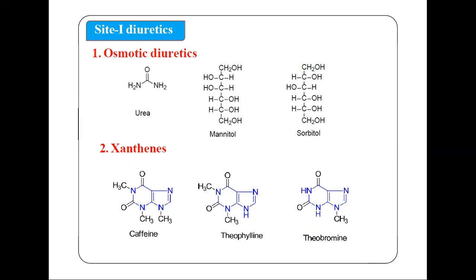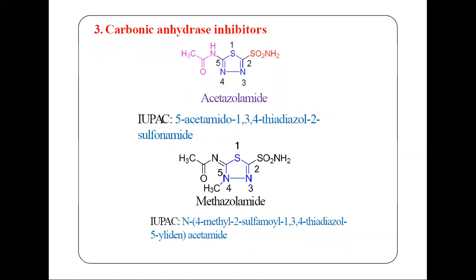The third class acting on site 1 is carbonic anhydrase inhibitors. Examples of carbonic anhydrase inhibitors include acetazolamide, methazolamide, and dichlorphenamide.